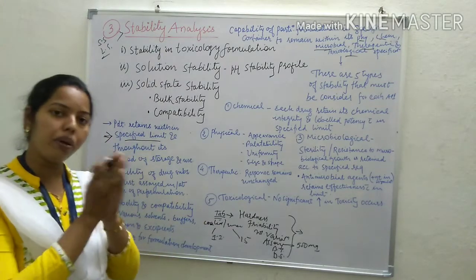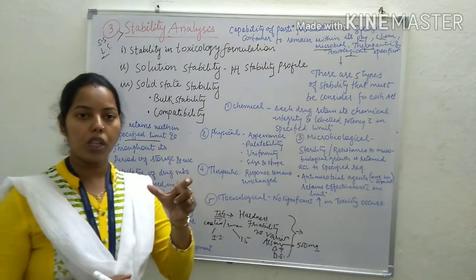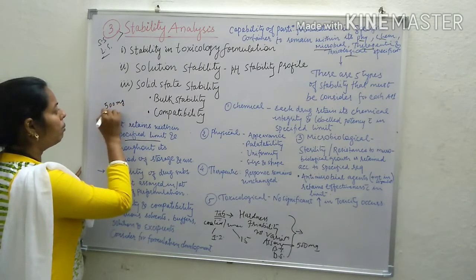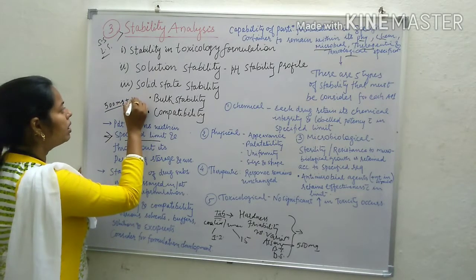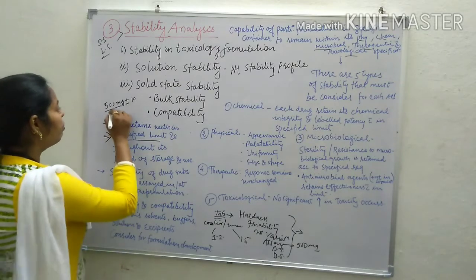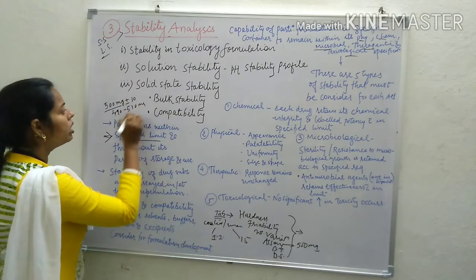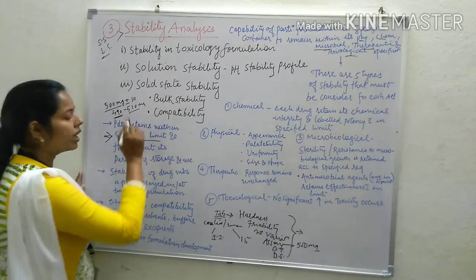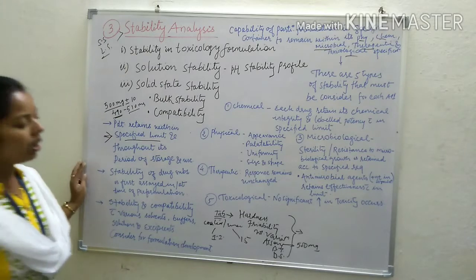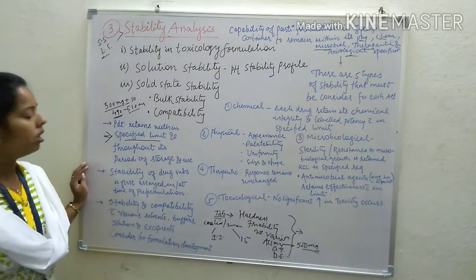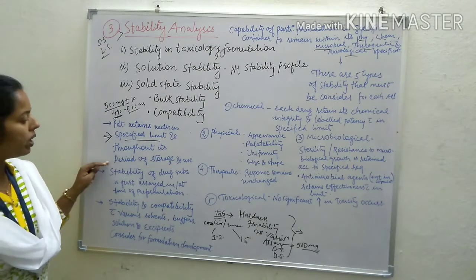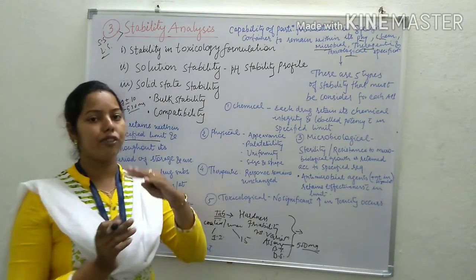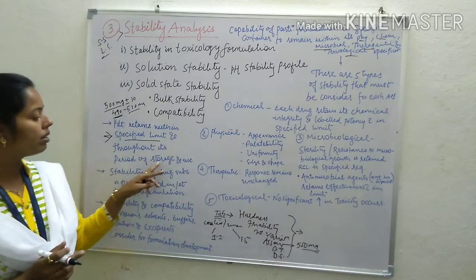The product should be within the limits. If we say a 500 mg tablet, the range is plus or minus 10%, meaning from 490 to 510 mg. So the label claim must not be less than 490 mg and must not be more than 510 mg. Through its period of storage and use, we can determine up to what time the product will retain its specified properties.